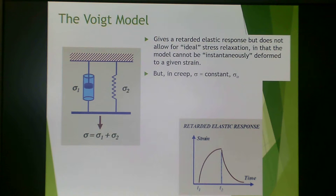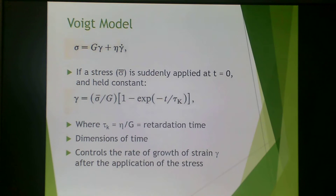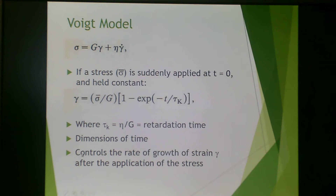The Voigt model gives a retarded elastic response but does not allow for ideal stress relaxation — that stress relaxation response is typical for the Maxwell model. In the Voigt model, the material cannot be instantaneously deformed to a given strain, but creep is constant. If a stress is suddenly applied at time zero and held constant, you get a time relationship governed by viscosity divided by rigidity modulus. This is defined as the retardation time, tau sub K, sometimes called the Kelvin model retardation time. It has dimensions of time and controls the rate of growth of strain after the application of stress.